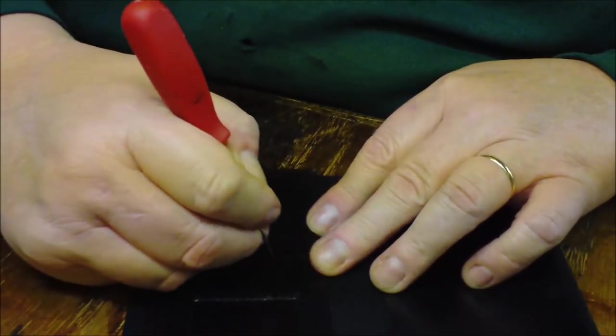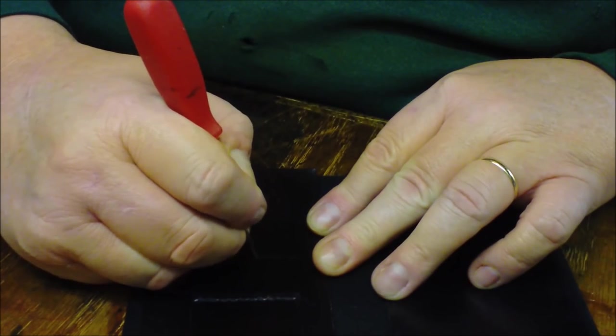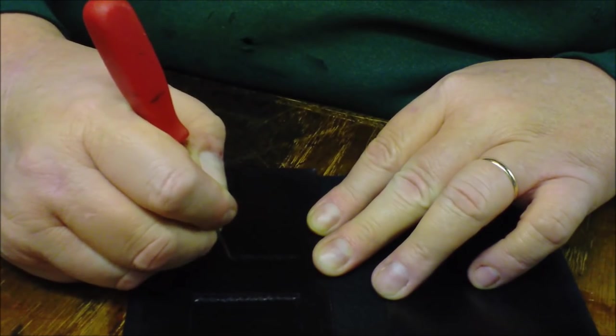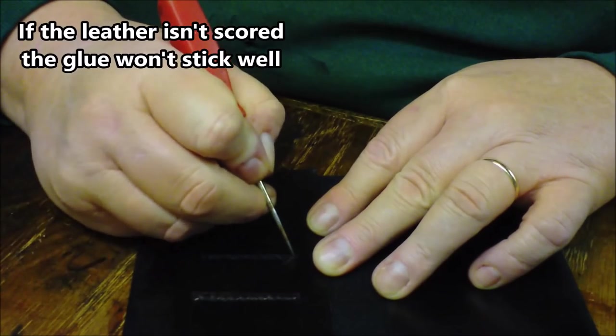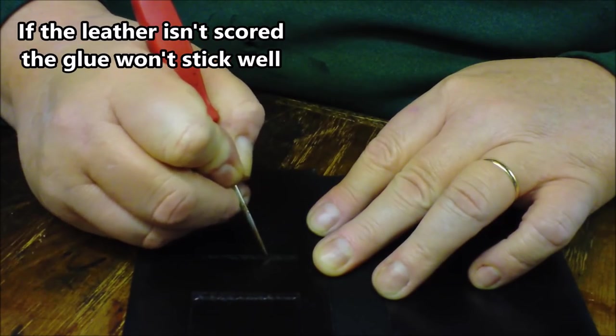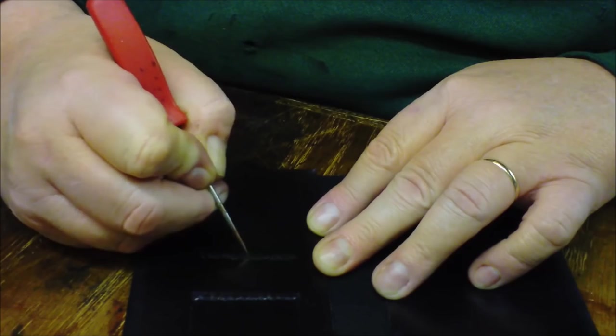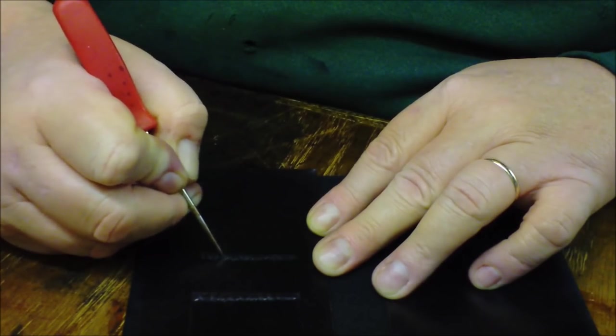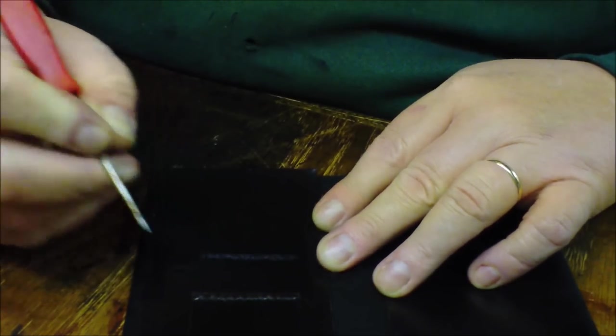But before I do that, I need to score this a little bit. I'm just going to use a sharp awl. And that's just going to give something, the glue something to bite into. I think the term is actually having tooth. Score that a little.